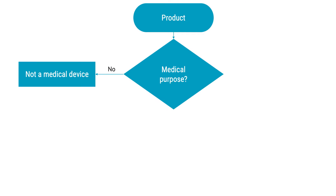There are two major factors that you would have to look at when trying to determine if your product is a medical device or not. Please note that this is a somewhat simplified process, but it should give you an idea of what the process is like. Firstly, as a manufacturer, you need to work out what you intend your product to be used for — meaning, does the product have a medical purpose or is it intended to be used for birth control? If it doesn't, then it's not a medical device. But if there is a medical purpose, it might very well be a medical device.